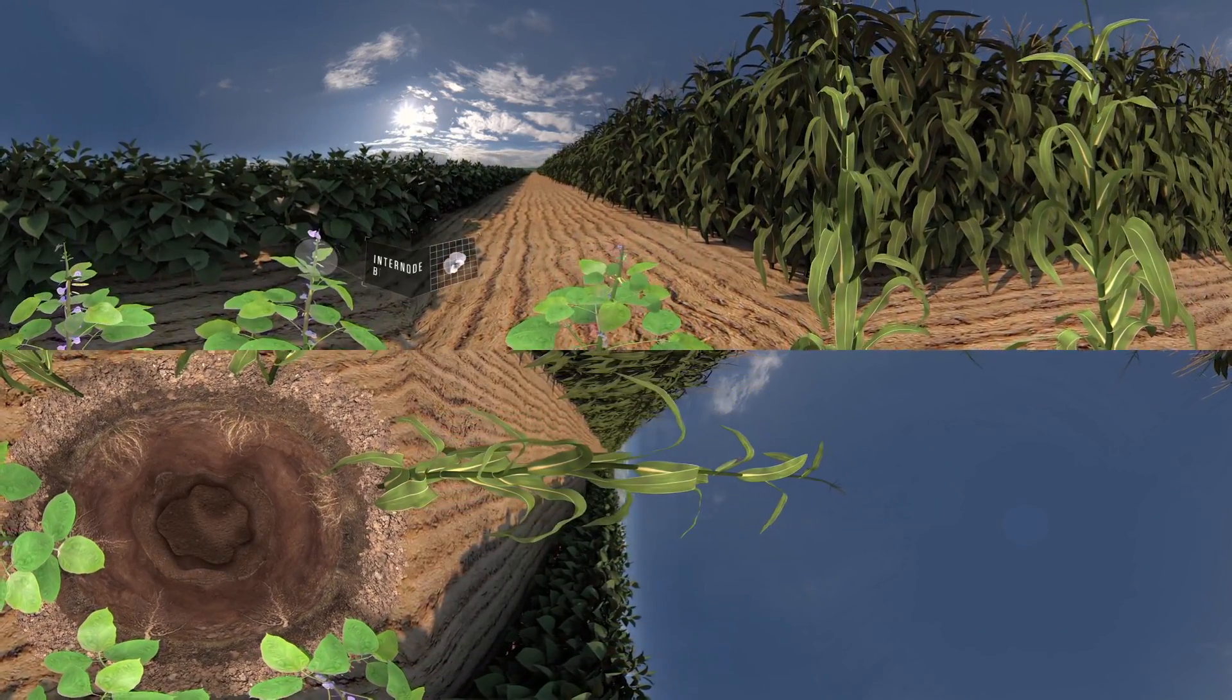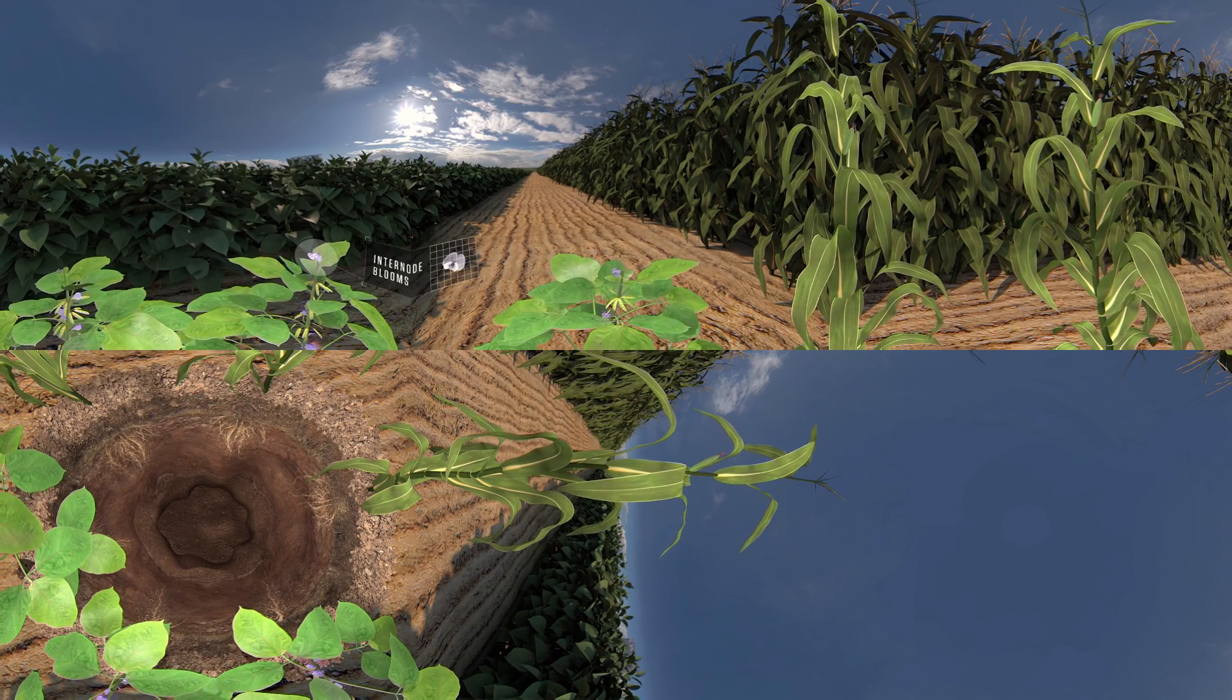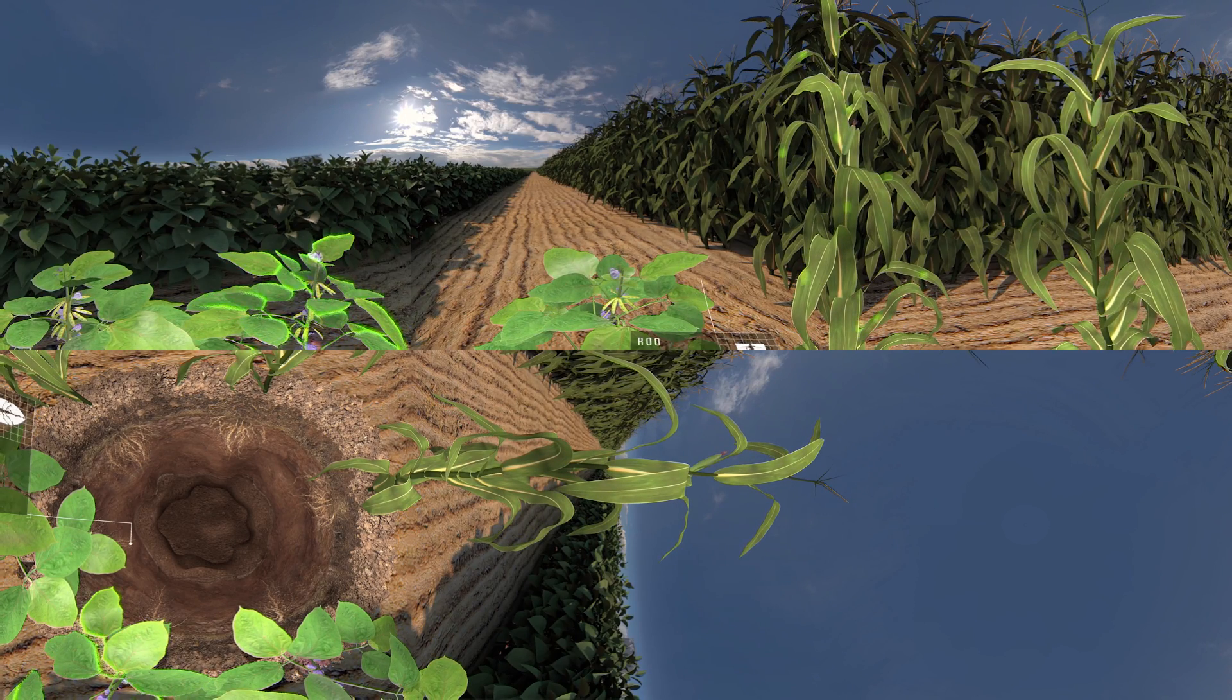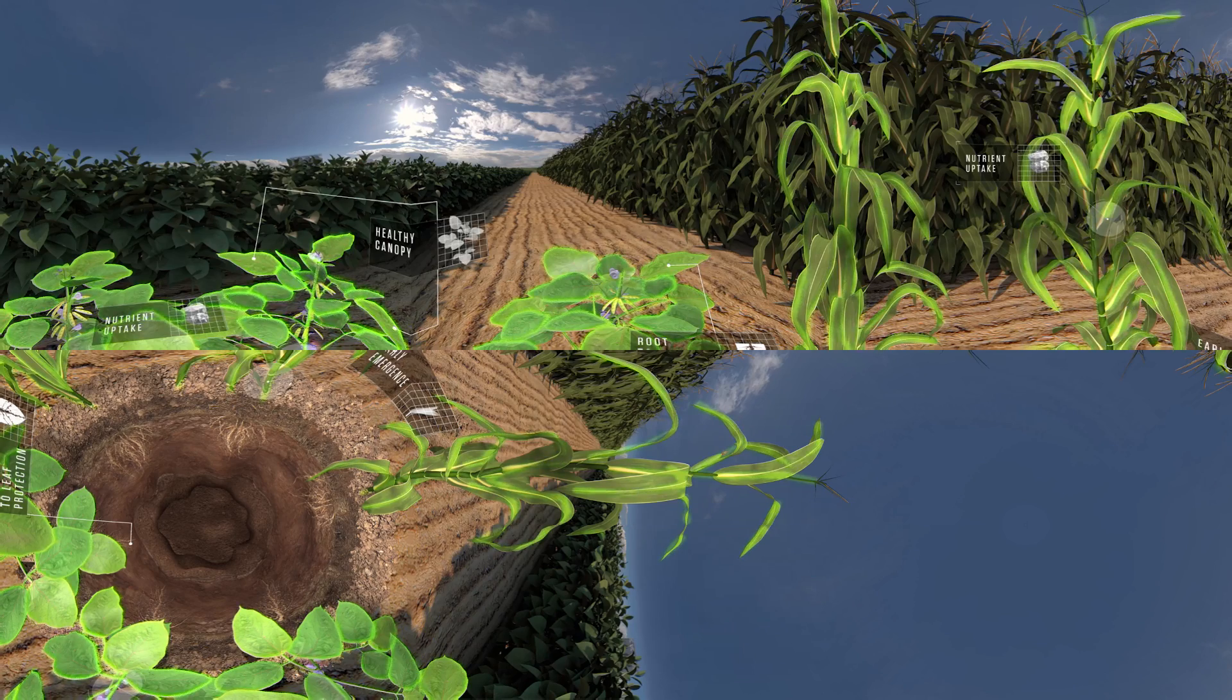As the season progresses and my crop grows, it's rewarding to see signs of a good harvest on its way. Root-to-leaf protection? I can see that right here. My crop emerged early, which turned into a healthy canopy. And you don't get green like this without abundant nutrient uptake.